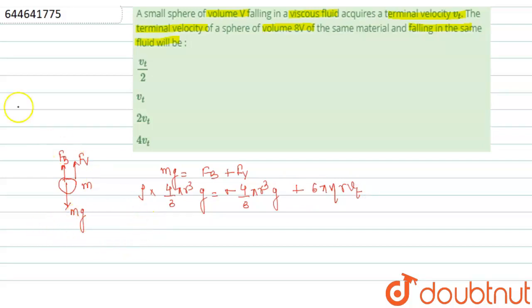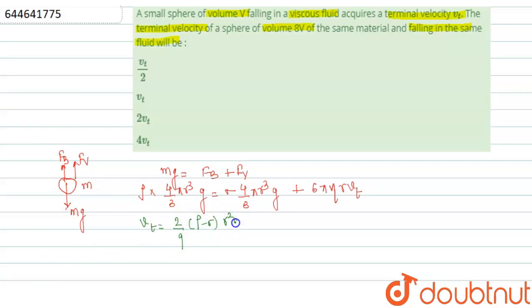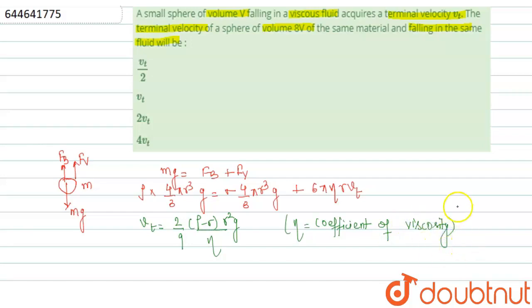When net force on the object becomes zero, the formula for terminal velocity is: vt = (2/9) × (rho − sigma) × r² × g / eta, where eta is the coefficient of viscosity.